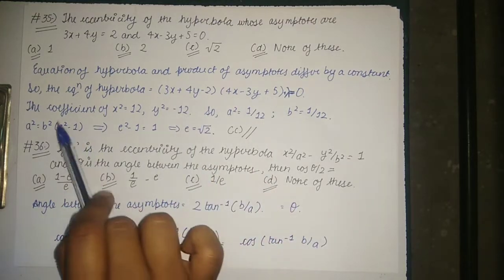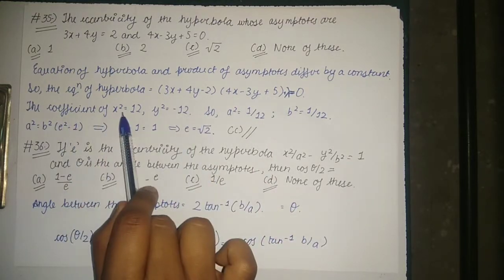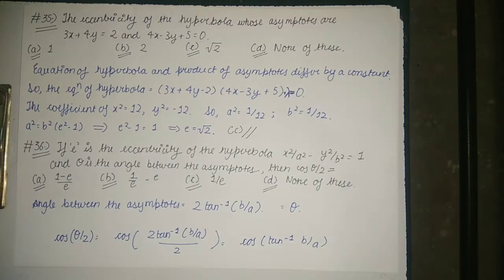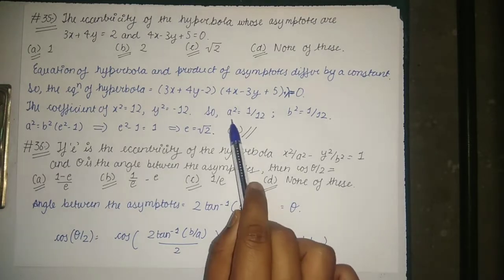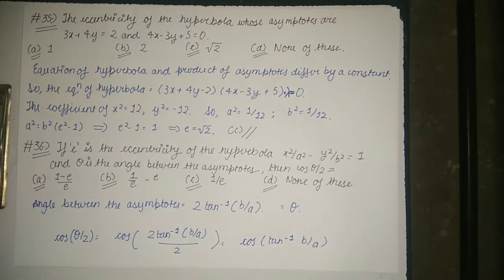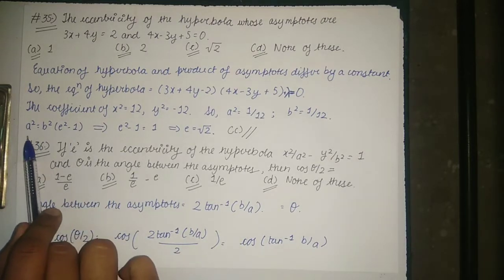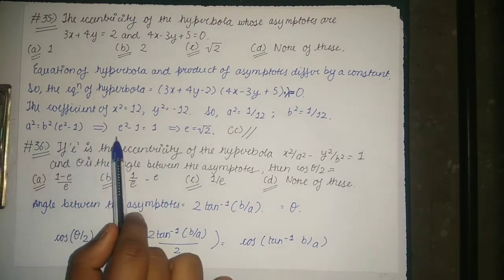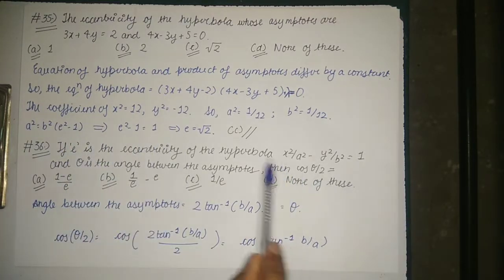From this, the coefficient of x² comes out to be 12 and the coefficient of y² comes out to be -12. Converting to the form x²/a² - y²/b² = 1, the value of a² comes out to be 1/12 and b² also equals 1/12. Applying a² = b²(e² - 1), the value of e² - 1 comes out to be 1, so the eccentricity is equal to root 2.